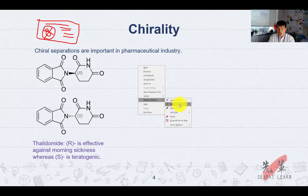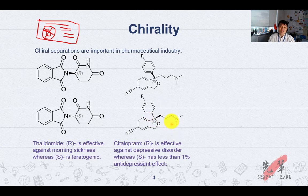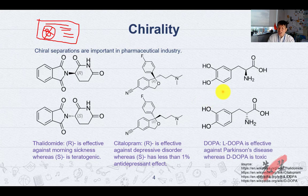Looking at the second example: citalopram. The R isomer is effective against depressive disorder, but the S enantiomer has less than 1% antidepressant effect. So if you do not separate this, while it may seem okay, you don't want to mislead your customers. If they don't study chemistry, they might think it's a 100% effective drug, not knowing that the S isomer has little effect. The last example is L-DOPA: L-DOPA is effective against Parkinson's disease, but D-DOPA is toxic. It's important not to mix them and give them to a patient. For more information, you can read the listed sources.